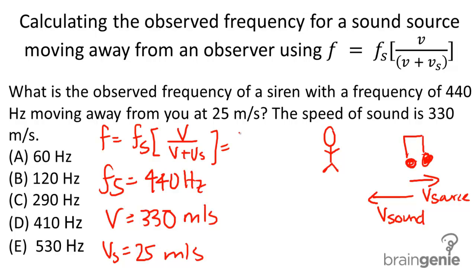So when we go ahead and plug this information in, we get 440, and then we have this ratio of 330 over 330 plus 25. And we get a final value of 410 hertz.